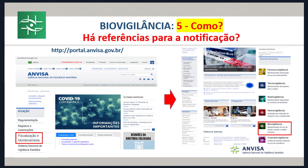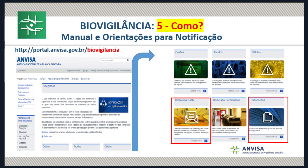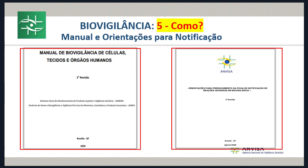Como notificar? Existem várias referências para notificação. A Anvisa publicou dentro do portal, na área de biovigilância, materiais disponíveis para entender o processo, as diretrizes e os fluxos. O manual de biovigilância e as orientações de preenchimento da ficha de notificação em biovigilância — que é o instrumento oficial determinado pela Anvisa nesse momento para receber as notificações — estão disponíveis.